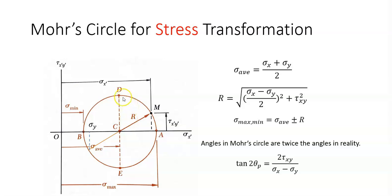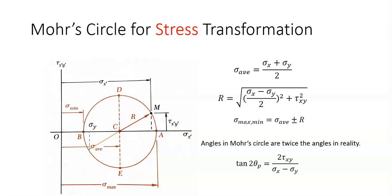Notice that at points D and E, we have maximum shear stress. At point D, we have positive shear stress, and at point E, we have negative maximum shear stress. The angle between the plane through D and E and the principal plane is 90 degrees in Mohr's circle, which in reality is 45 degrees. So, at 45 degrees with respect to the principal plane, we have maximum shear stress.